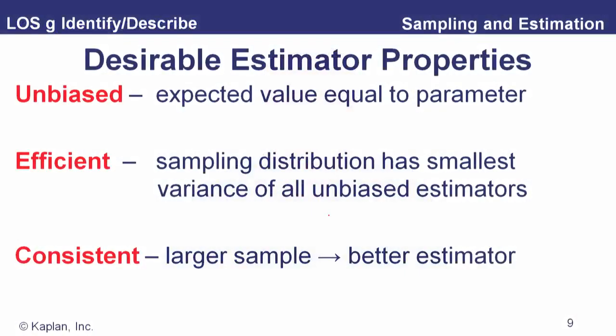Let's look at the desirable properties of estimators. The first is being unbiased — that is, the expected value of the estimator equals the parameter. If we take a sample and calculate the sample mean, it's an unbiased estimator of the true mean. It may not equal the true mean exactly, but on average it's distributed around that true mean, so the expected value of the sample mean equals the mean of the underlying population.